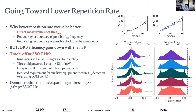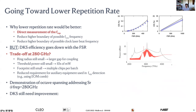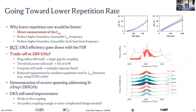We have demonstrated an octave-spanning comb addressing the strontium transition at a 280 GHz repetition rate. Shown here is the modulation instability (MI) comb, as DKS generation still requires further improvement. The coupling geometry is extremely complicated — the pulley coupling has significant implications for the output coupling efficiency of the dispersive wave.